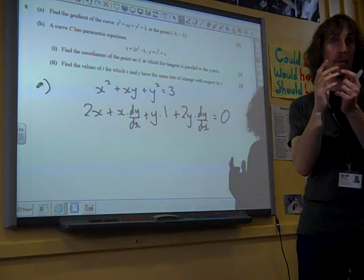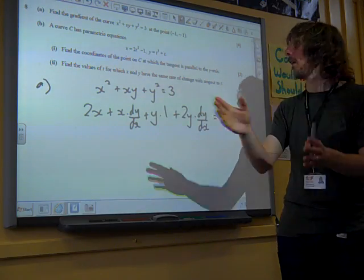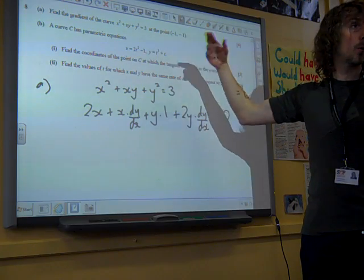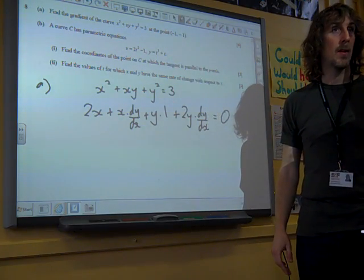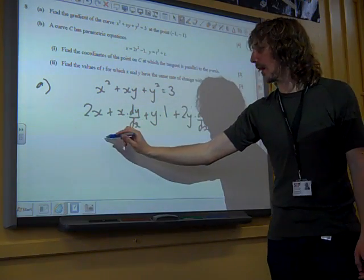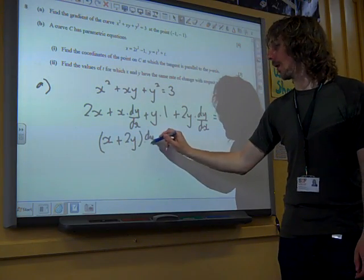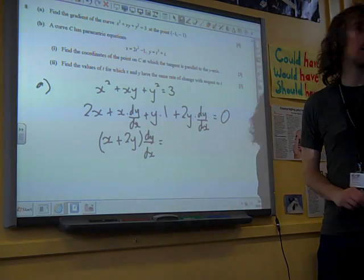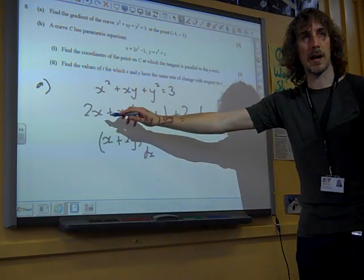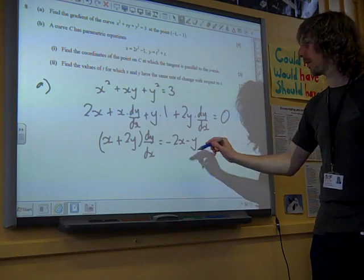The question didn't say find dy/dx, so we don't have to do that. We could just sub in the value of minus 1, minus 1 and get what the value of dy/dx is from there. Just for completeness, I feel that I want to find dy/dx anyway. If we factorize the left hand side, we've got x plus 2y lots of dy/dx, and if we take the terms that don't involve dy/dx to the other side, we've got 2x and y, so minus 2x minus y.